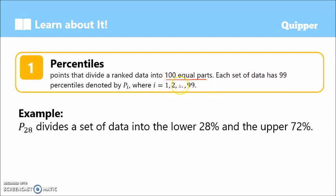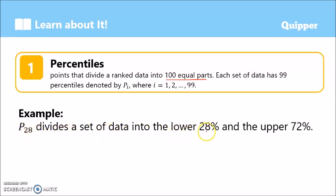So we go up to P sub 99. For example, P sub 28 divides a set of data into the lower 28 percent and the upper 72 percent. So the meaning of P sub 28 is that 28 percent are lower than P sub 28, and 72 percent are higher or greater than P sub 28.